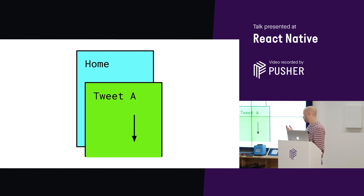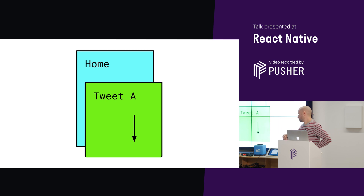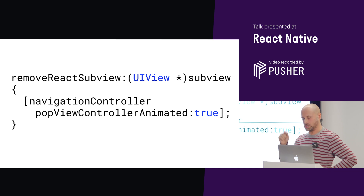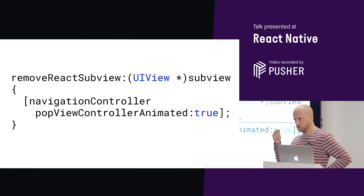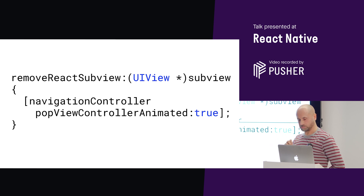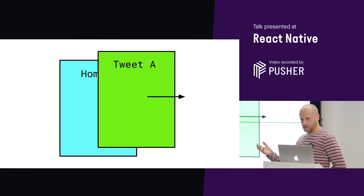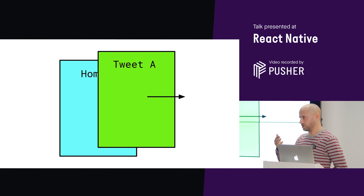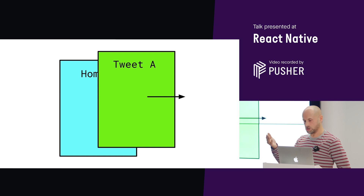On iOS, when the user taps the back button, React Native tells the NavigationStackView Objective-C class to remove its child tweet view by calling its removeReactSubView method. The NavigationStackView overrides this method to change the default rendering behavior, calling into the native iOS navigation API — it pops the tweet view from the top of the navigation controller stack. iOS then takes care of the rest, animating the tweet screen back out the way it came in, sliding it off the screen and showing the home screen in its place.